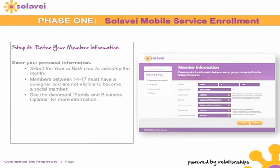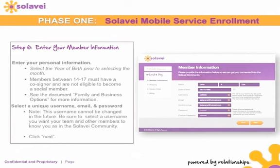Be sure to select the year of birth prior to selecting the month. Members between 14 and 17 must have a cosigner and are not eligible to become a social member. You can see the family and business options if you would like more information about how to set up your family or business accounts. Now select a unique username, email, and password.